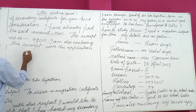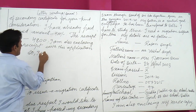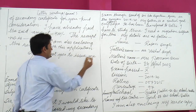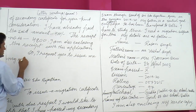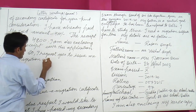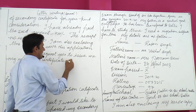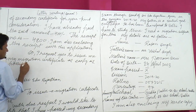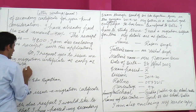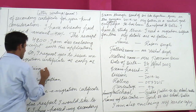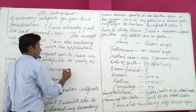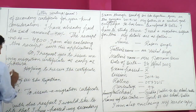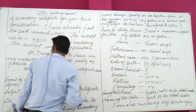Now change the paragraph for the final request. So, I request you to issue me my migration certificate as early as possible. Hoping to receive the certificate soon — or you can write 'awaiting.' This means: hoping to receive the migration certificate as soon as possible.